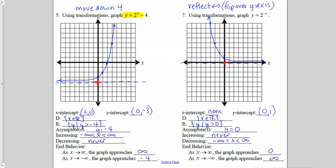For number five, the minus 4 is on the outside, so that's going to take our whole graph and move it down 4, making our new anchor point right here. Because of that, our range is now y is greater than negative 4, and our asymptote is now y equals negative 4. As x approaches negative infinity, y now approaches negative 4. Shifting the graph down 4 affected the range, the value of the horizontal asymptote, and the y value as x approaches negative infinity. It also gave our function the opportunity to have an x-intercept — we cross the x-axis at x equals 2 — and our y-intercept is now negative 3.